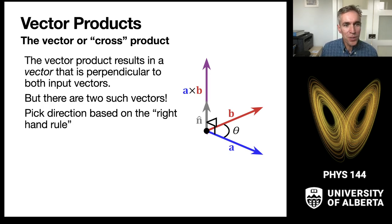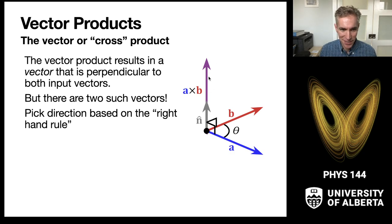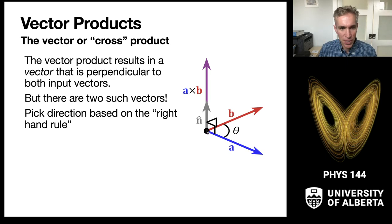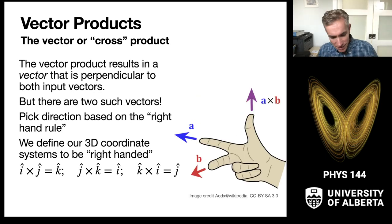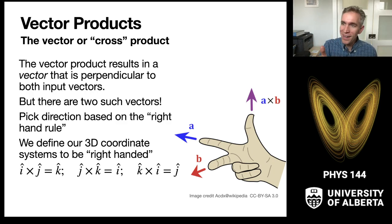There are two choices for that perpendicular vector. If I have a and b and I'm considering a × b, I could be going up or going down. We pick the direction based on what we call the right-hand rule, and we ignore the other direction. We call it the right-hand rule because right-handed people outnumber left-handed people and we had to pick a convention. All our coordinate systems follow the right-hand rule.